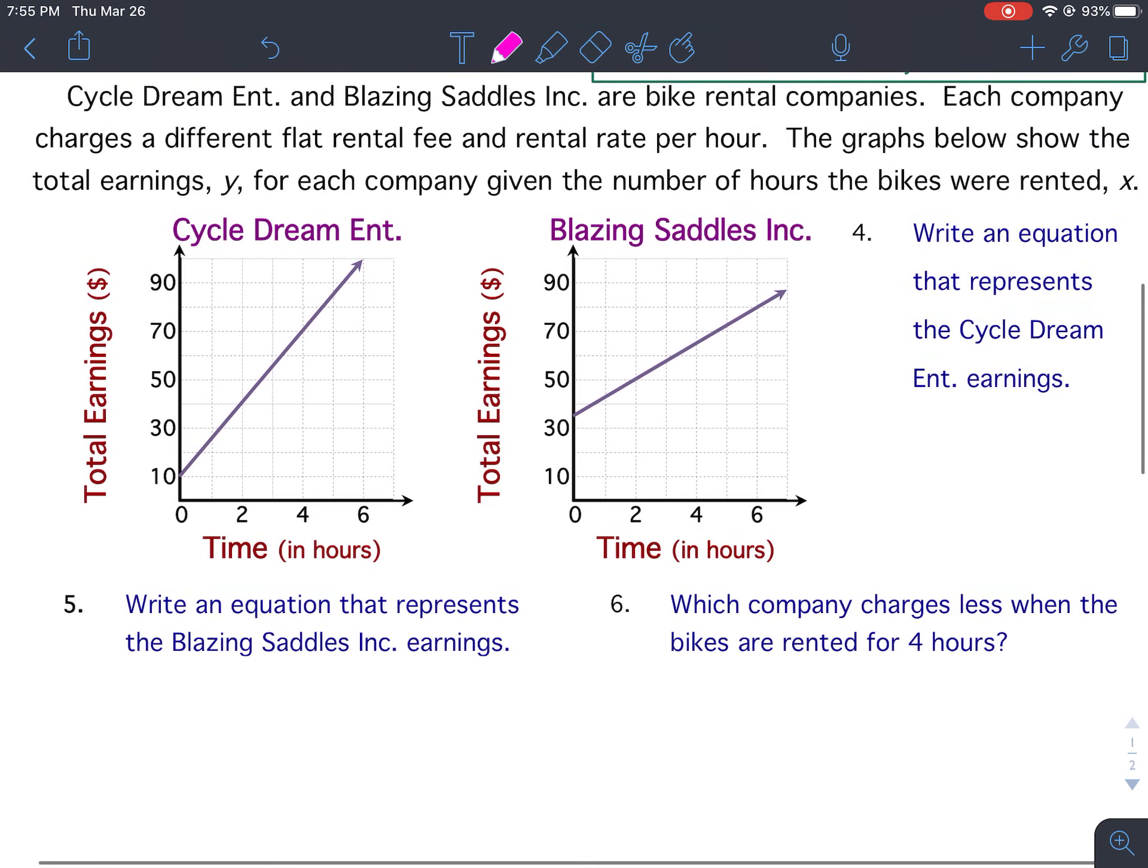Cycle Dream Enterprise and Blazing Saddles Incorporated are bike rental companies. Each company charges a different flat rental fee and a rental rate per hour. The graphs below show the total earnings y for each company given the number of hours the bikes were rented x. So some family or person rents a bike, and they rent the bike for x amount of hours.